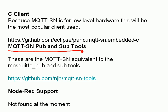These are the MQTT-SN publish and subscribe tools — the MQTT-SN equivalents of the Mosquitto Pub and Sub tools that you're familiar with from MQTT. They're available on GitHub for download.